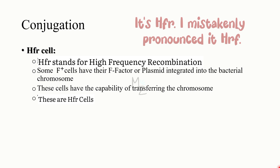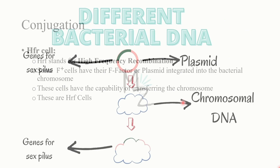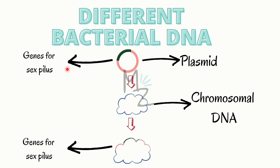Before talking about HFR to F-negative conjugation, we should know what HFR is. HFR stands for high-frequency recombination. Some F-positive cells have their F-plasmid integrated into the bacterial chromosomal DNA, acquiring the capability of transferring the chromosome into another cell. These cells are called high-frequency recombination cells. In this picture, the plasmid has genes for the sex pilus, and sometimes this plasmid integrates itself into the chromosomal DNA of the bacteria.